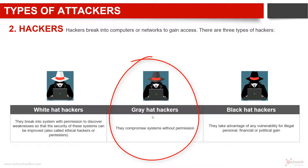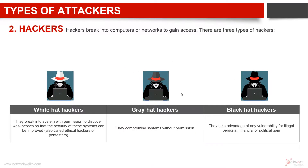Then the question is: who are in the middle? These are the gray hat people. Gray hats compromise systems without permission, meaning they don't do it for illegal financial purposes, and their intention might not be bad, but their way of doing things is bad since they act without permission.